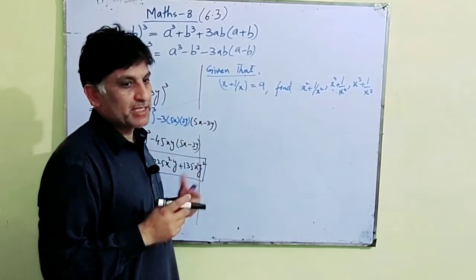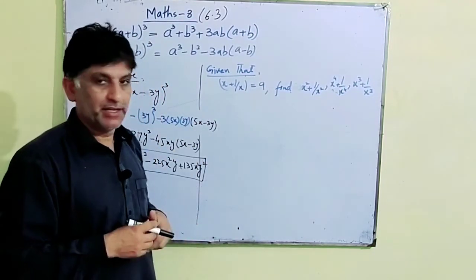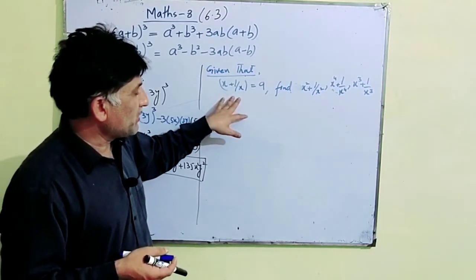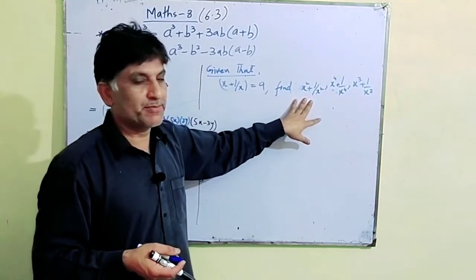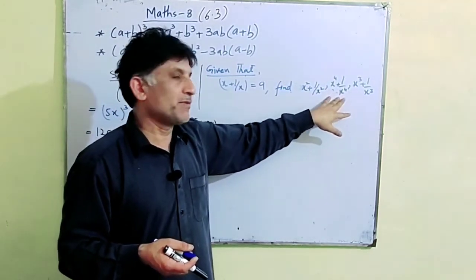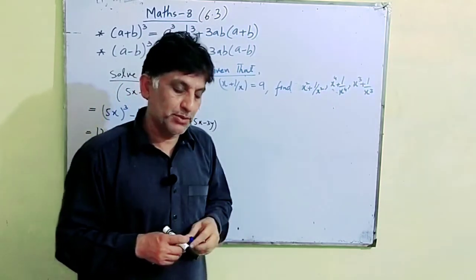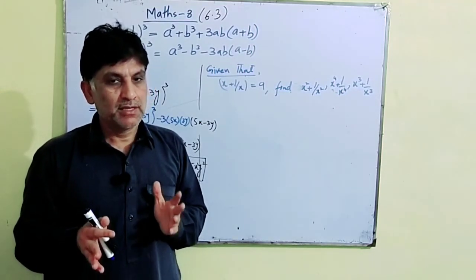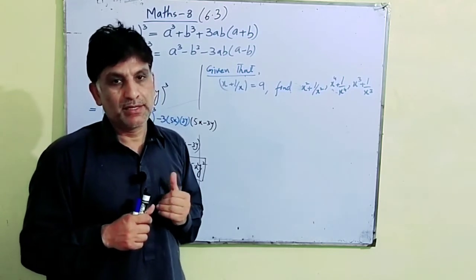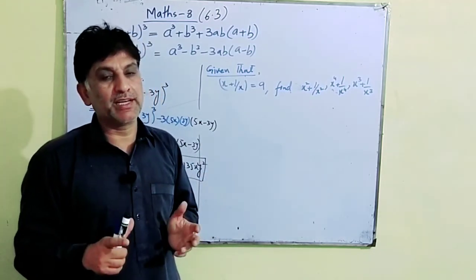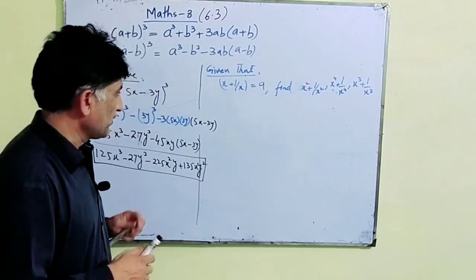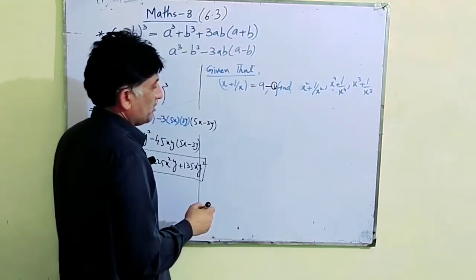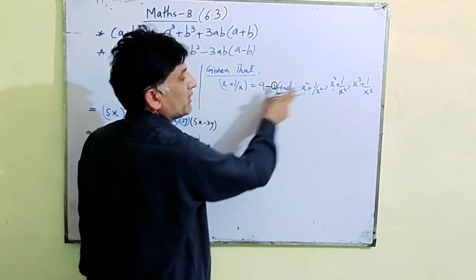Now we have set another problem. We take the value of x + 1/x, or we can also take x - 1/x. So given x + 1/x = 9, calculate x² + 1/x², x⁴ + 1/x⁴, and x³ + 1/x³. Squaring both sides is what we do to find the answer.